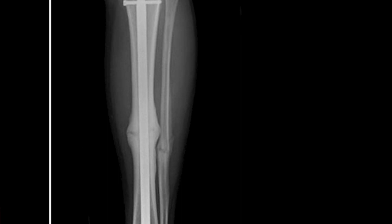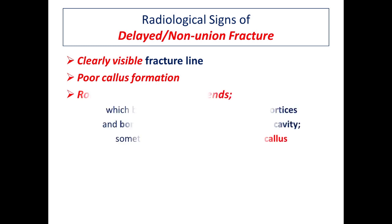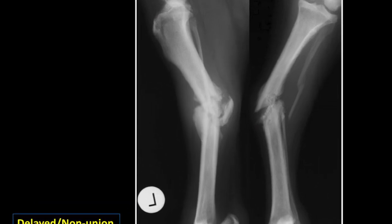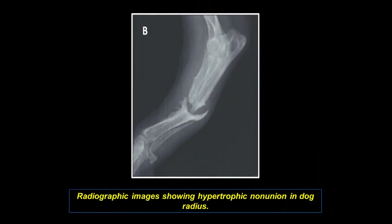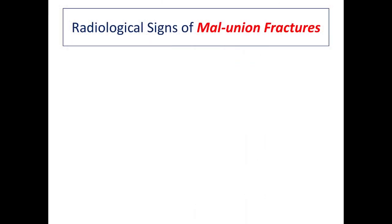The radiological signs of delayed or non-union fracture include clearly visible fracture lines even after weeks with poor callus formation. An important sign is rounding of fracture ends that look like an elephant foot. You will observe sclerosis at both cortices of the bone and sclerosis in the medullary cavity — this is called elephant foot non-union. An example of hypertrophic non-union in the radius is also demonstrated.